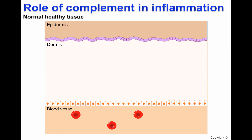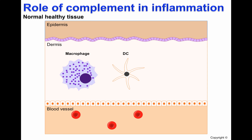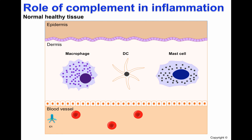In normal healthy tissue, there are several types of immune cells: macrophages, which phagocytose pathogens; dendritic cells, which are the link between innate and adaptive immunity; and mast cells, which release inflammatory cytokines during allergic reactions. In blood vessels, there are many components of the complement system, including C1, MBL, and C3, as well as antibodies, neutrophils, and other immune cells.